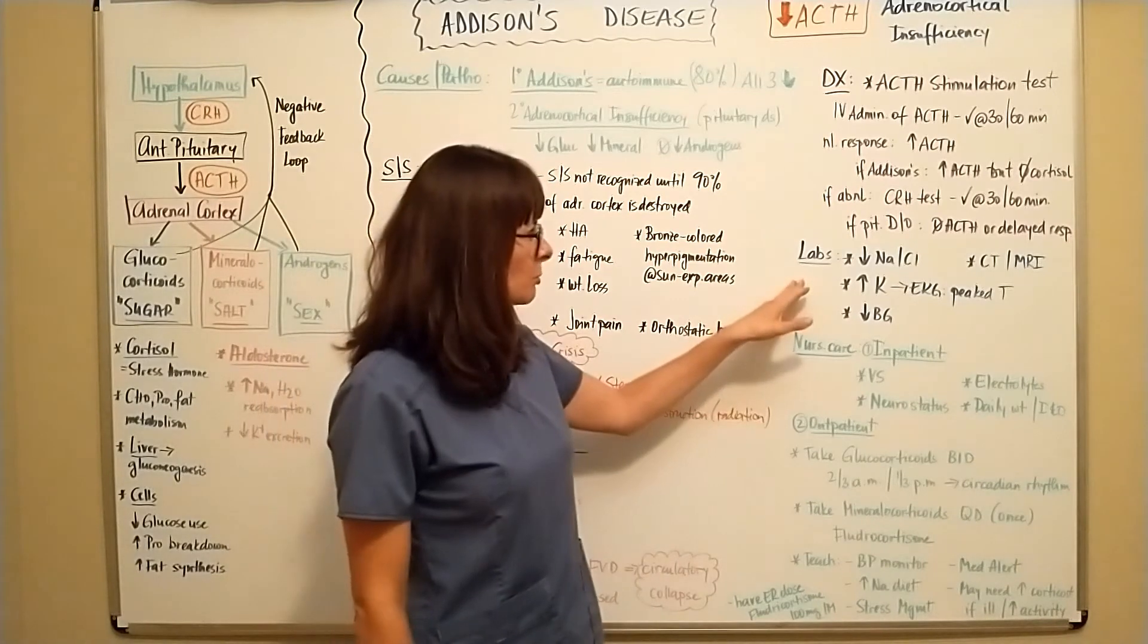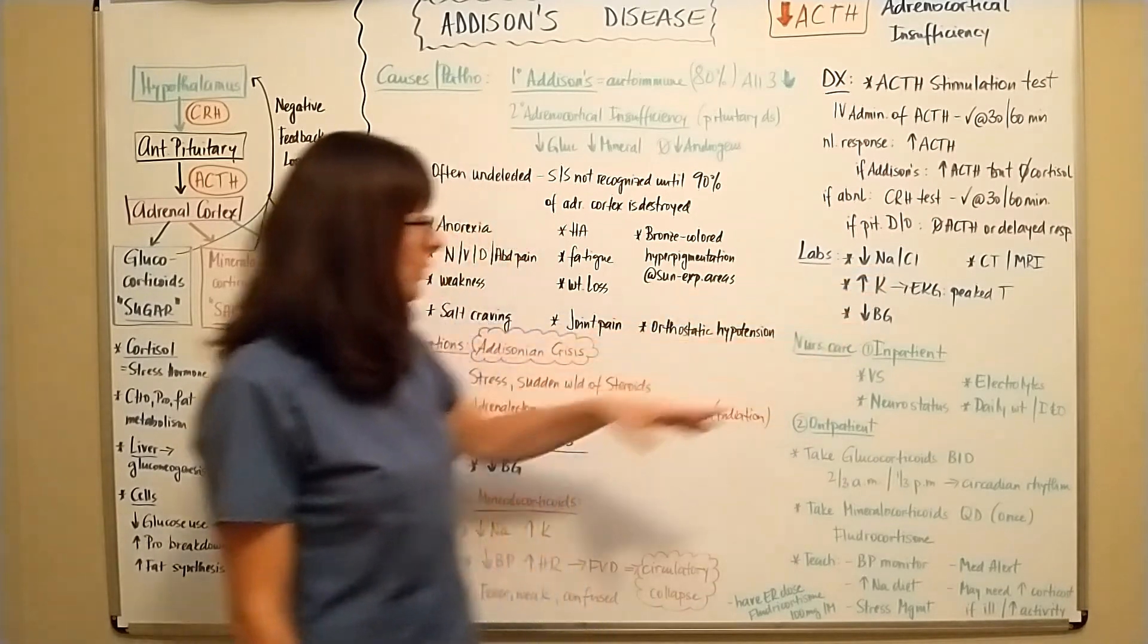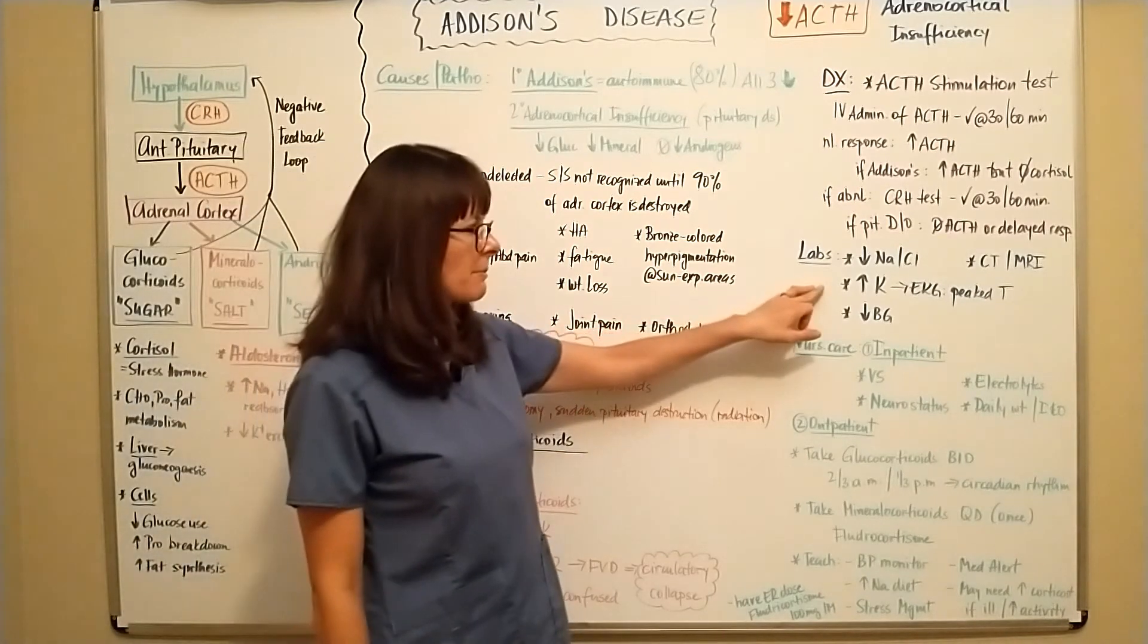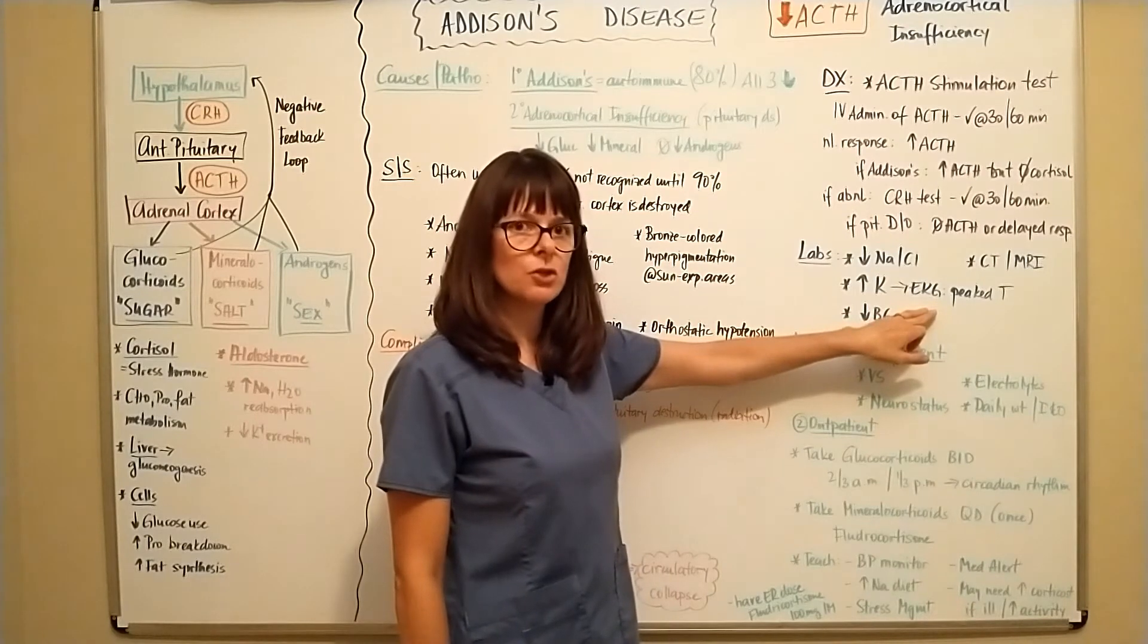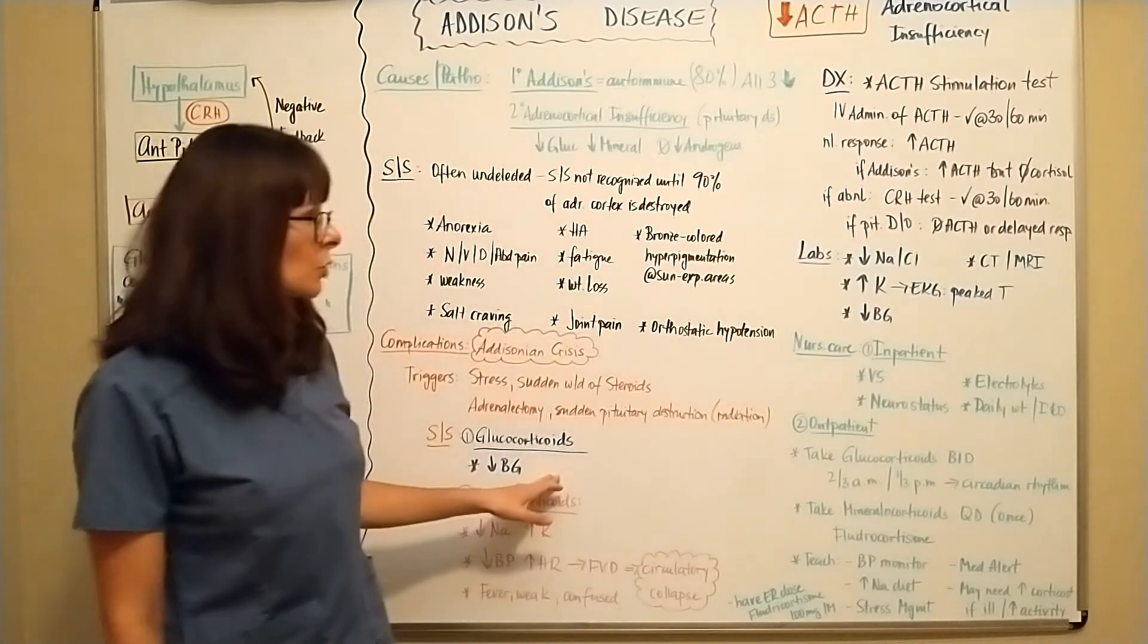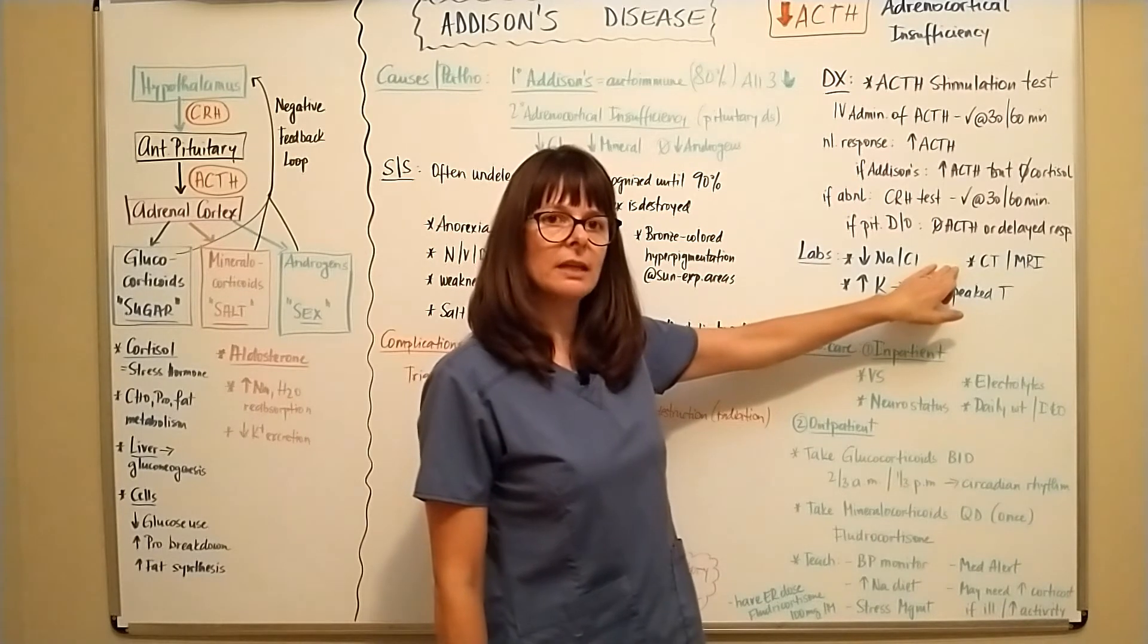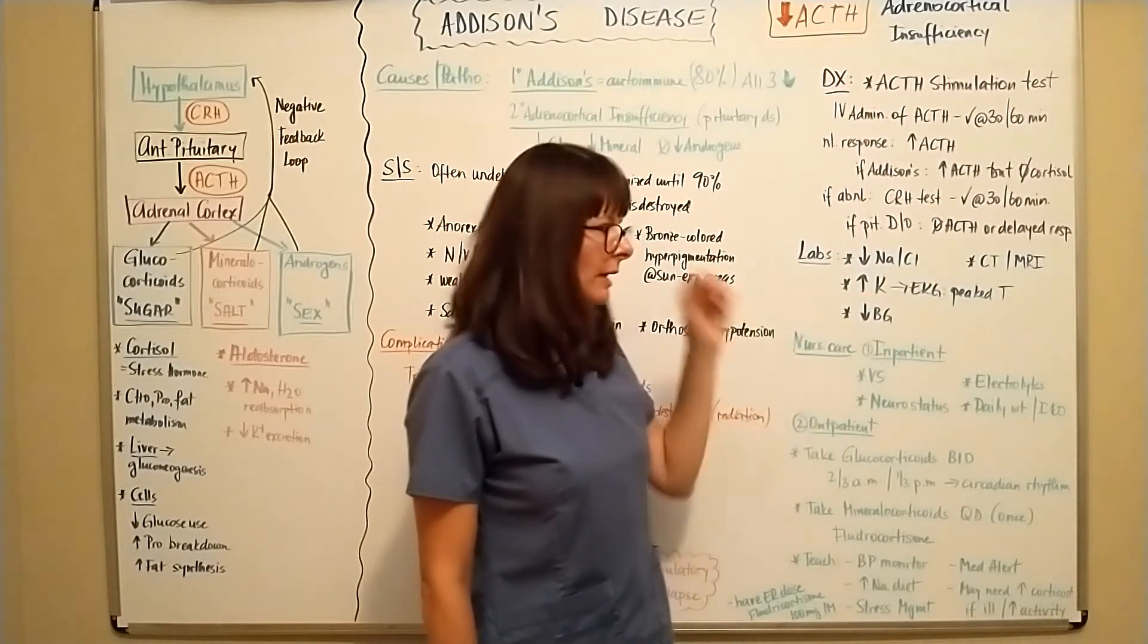Lab results to be expected in Addison's disease would be low sodium and chloride, because again, we're not able to do the reabsorption here. Everything is decreased, which then leads to hyperkalemia, which can lead to peak T waves on an EKG and can be dangerous. It'll lead to hypoglycemia, as we discussed over here. And we would want to evaluate a CT or MRI to see if there's any kind of structural defects to the adrenals or the pituitary gland.